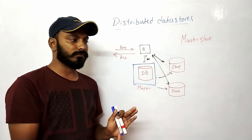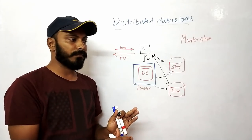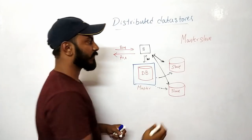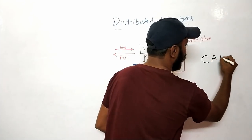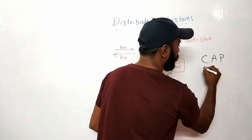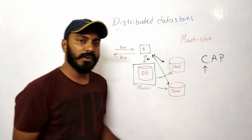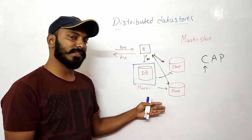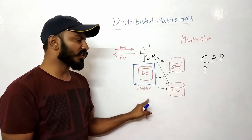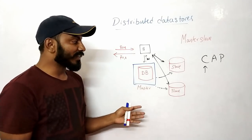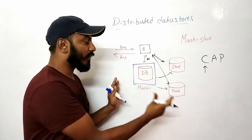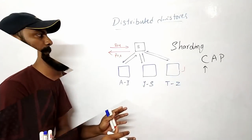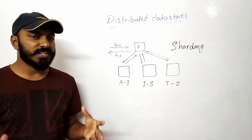This is not a consistent database setup. There is a theorem called the CAP theorem, and in this master-slave setup we can't guarantee consistency. So let's see how we can scale our databases properly.